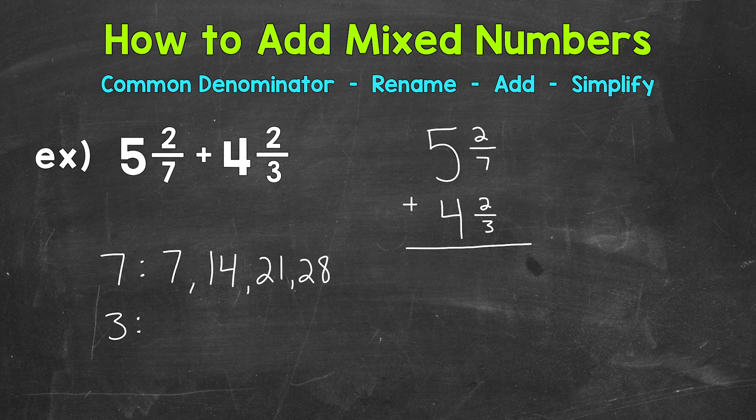Now we'll write the first 4 multiples of 3. So 3, 6, 9, 12. And we don't have any matches there, we don't have anything in common. So let's extend our lists. Now 7, we're already at 28, and for our multiples of 3, we're only at 12, so let's extend that list.